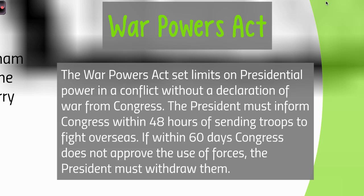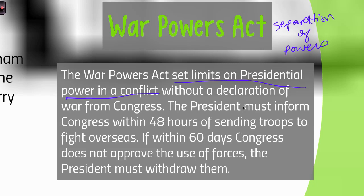Something else that came out of the Vietnam War has to do with constitutional powers and upholding the separation of powers and checks and balances. One concern that led to the War Powers Act was that Johnson was able to send troops to Vietnam without officially declaring war — which the president can't do; it has to be Congress. This was a way for the president to send troops without congressional approval, which is exactly what he did after the Gulf of Tonkin Resolution. So they decided to pass the War Powers Act, whose main goal is to set limits on presidential power in a conflict without a declaration of war.